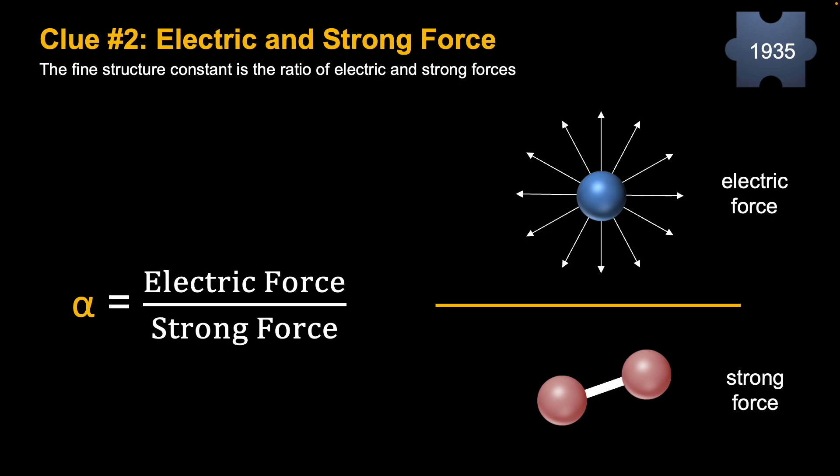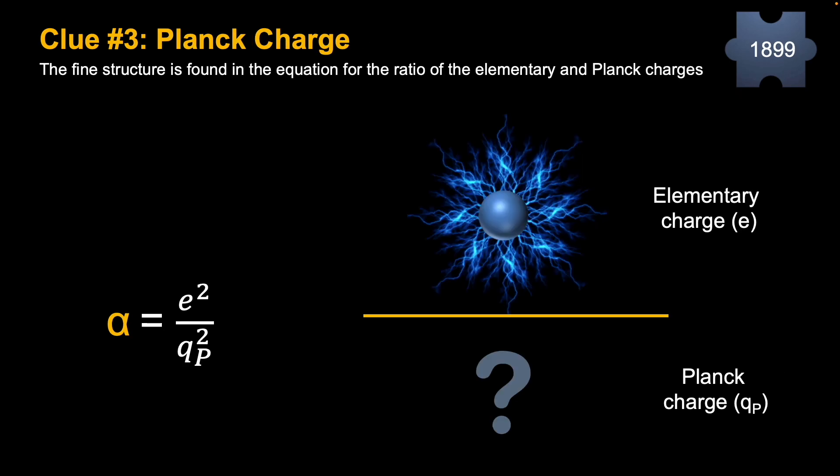Still don't know what it is though. So clue number three, and it's kind of related to this one, which is if you take the square of the elementary charge and you divide that by the square of the Planck charge, you get alpha, fine structure constant again. Now this is somewhat related to the one before because the elementary charge is related to the electric force. So actually this probably gives us more of a clue that the Planck charge is related to the strong force, just based on this equation.